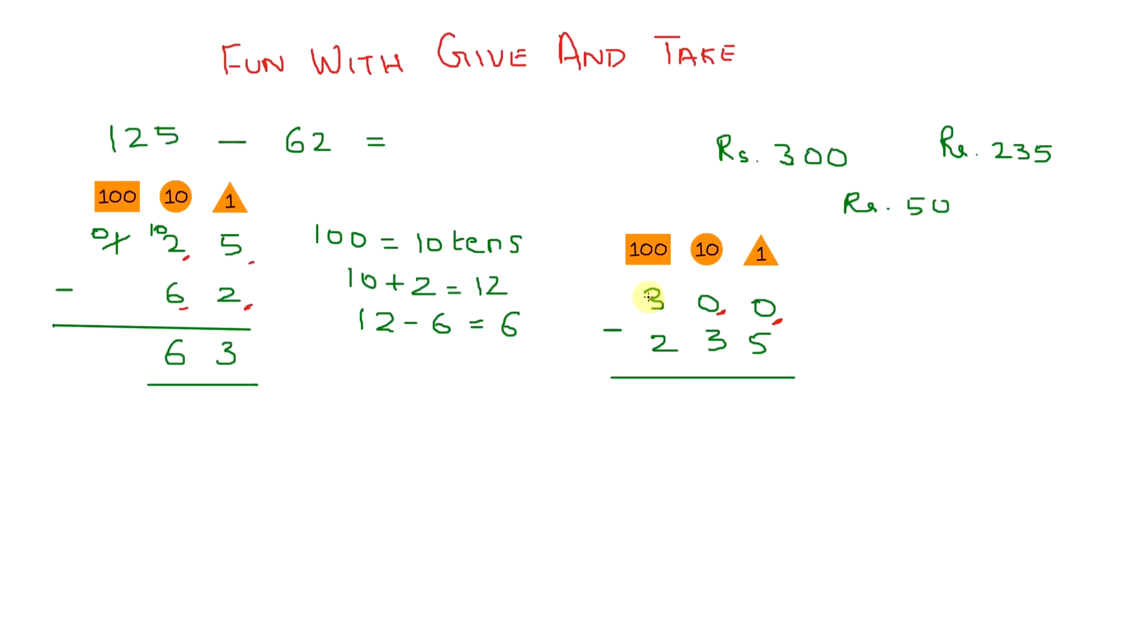Okay, never mind. We can't borrow from the tens, but we can borrow from the hundreds. So we cancel this 3 and write a 2. So what we have done right now is that we have borrowed a hundred. So 100 is ten tens, right? So in the tens column we write a 10.